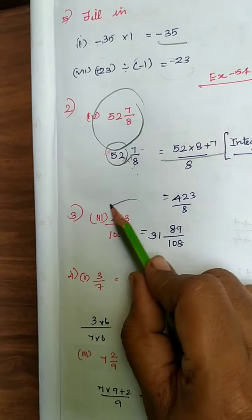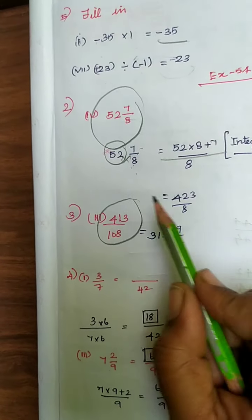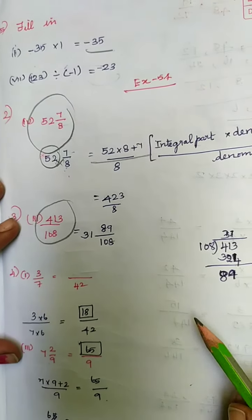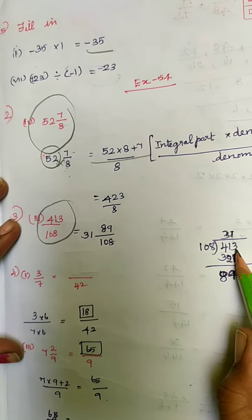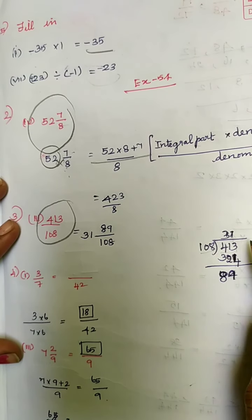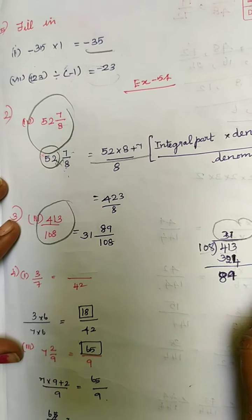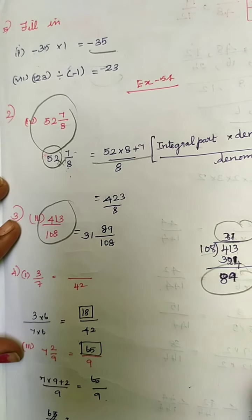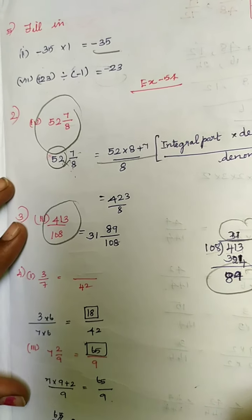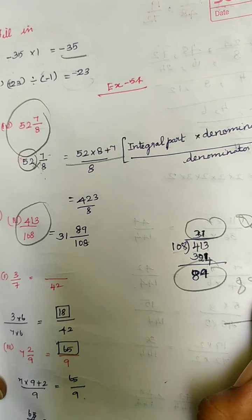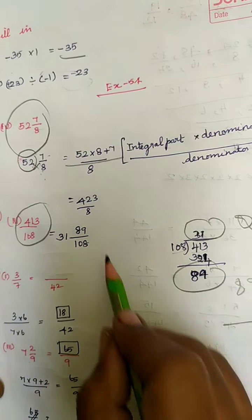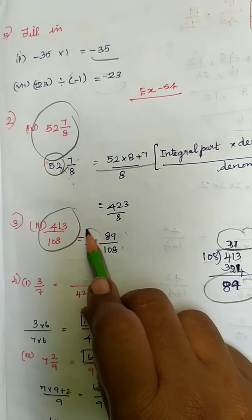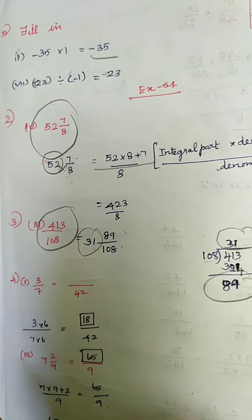The third subdivision says converting an improper fraction into a mixed fraction, so you divide. Dividing 413 by 108, you get a quotient of 3 and a remainder of 89. Since 89 still has to be divided, 89 divided by 108 — your integral part is 3 and the fraction part is 89 by 108.